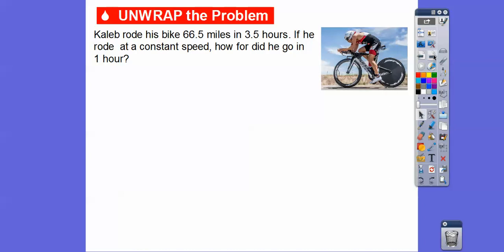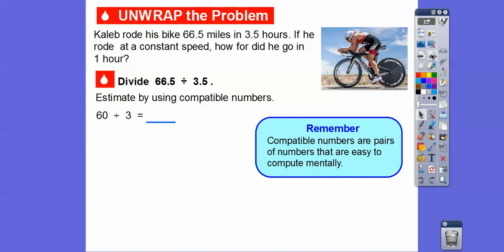Caleb rode his bike 66.5 miles in 3.5 hours. If he rode at a constant speed, how far did he go in one hour? We're going to divide. Since it took 3.5 hours to do 66.5 miles, then we're going to divide this into this. This will tell us how many for one hour. It's always good to estimate.